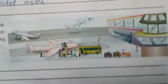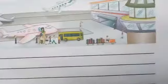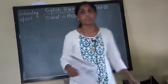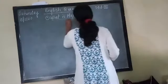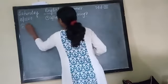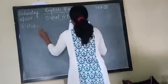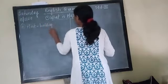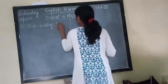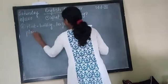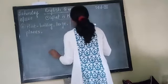This is the picture which we have to read — picture reading. Now what we have to do is write down a paragraph on it. The hint words given are: building, large planes, flying.